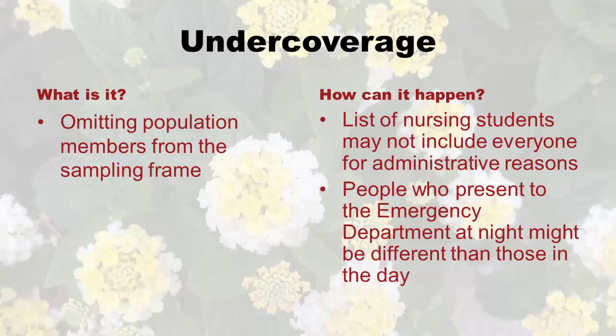How can this happen? Let's say you got a list of nursing students from a college — maybe somebody signed up that day and didn't make it into the database in time, and you're missing them. Or with that HR list at MGH, some nurses might be through a temp agency and not on the payroll. People who present at the emergency department at night might be different than those in the day, so if you omit population members from your sampling frame, they don't get a chance to be in it. That's called under coverage.